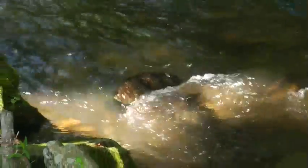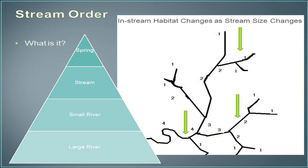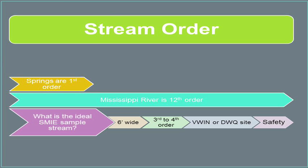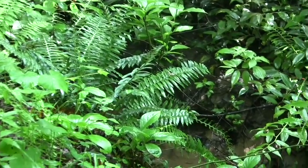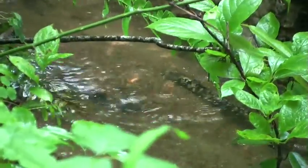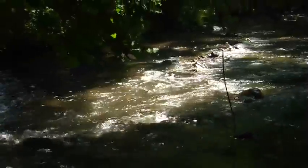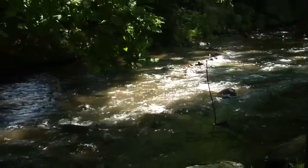Habitat varies greatly depending on the size of the stream. One way biologists approximate stream size is something called stream order. Stream order starts with first order streams, which are basically springs coming directly out of the mountain. When a first order stream meets another first order stream, it becomes a second order stream. When a second order stream meets another second order stream, it becomes a third order stream. If a third order and a second order stream meet up, nothing changes — it continues as a third order stream. For example, the Mississippi River is estimated at being a 12th order stream.